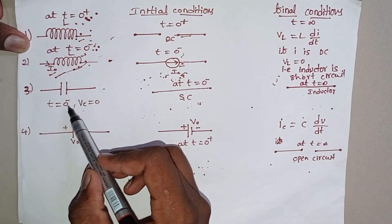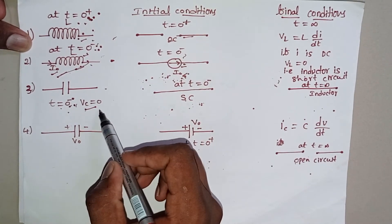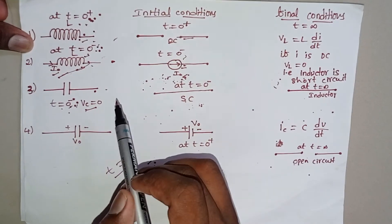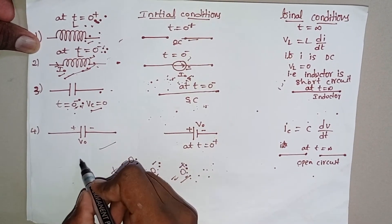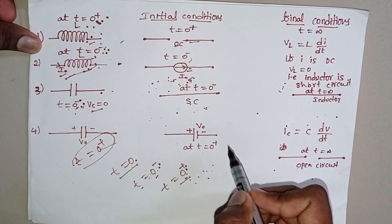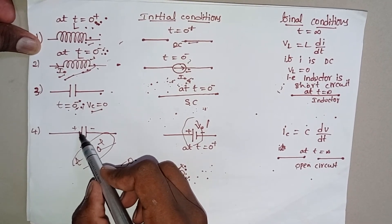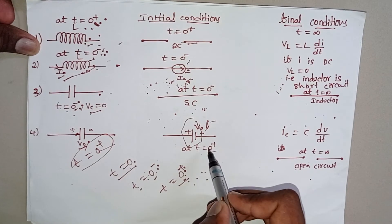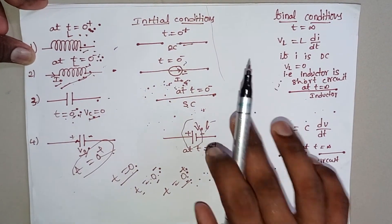Consider the capacitor at T = 0−. At T = 0−, the voltage across the capacitor is equal to 0, and the capacitor acts as a short circuit. At T = 0− and also at T = ∞, the capacitor acts as a short circuit. At T = 0+, just after switching on the supply, the capacitor acts as a voltage source, whose value is the voltage across the parallel plates of the capacitor. So at T = 0+, the capacitor acts as a voltage source, and at T = 0−, it acts as a short circuit. These are the initial conditions.